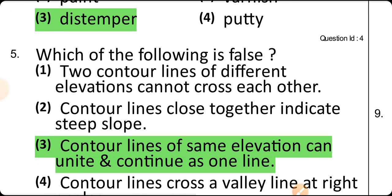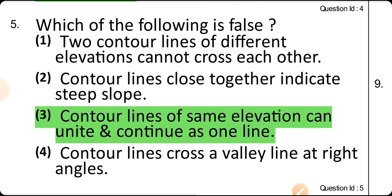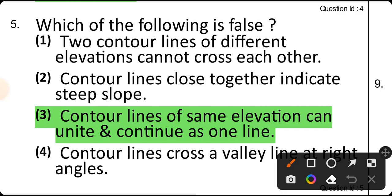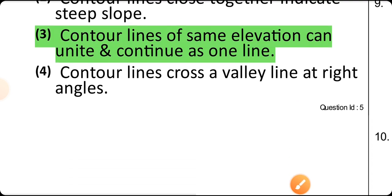Which of the following is false? Look at the statements. Two contour lines of different elevation cannot cross each other — that is correct. Contour lines close together indicate steep slope — correct. Contour lines cross a valley line at right angle — correct. The wrong answer is the third option: contour lines of same elevation can unite and continue as one line — that is the wrong statement.